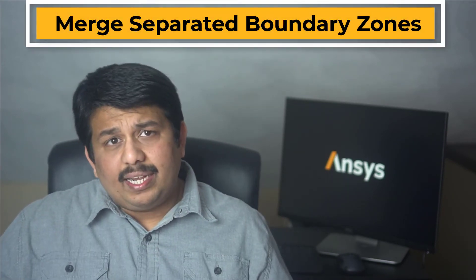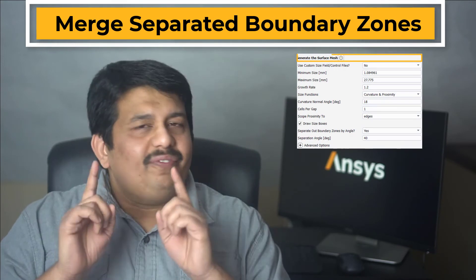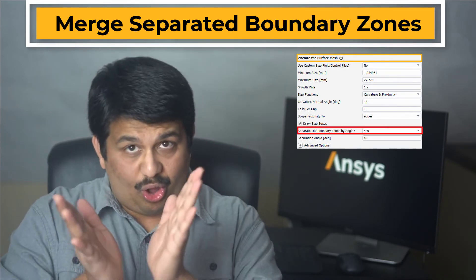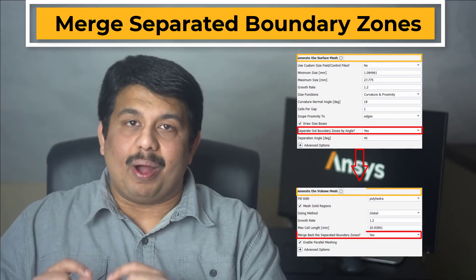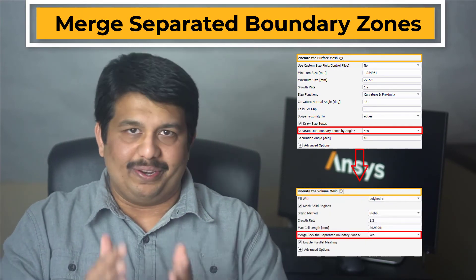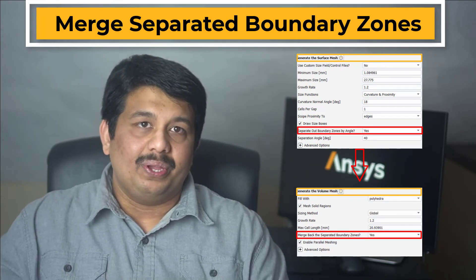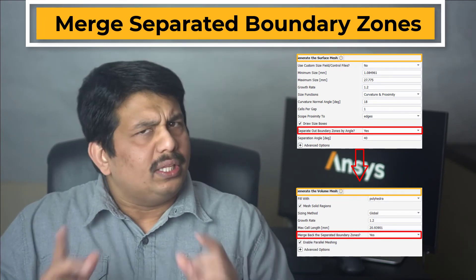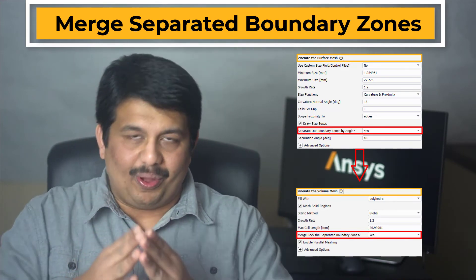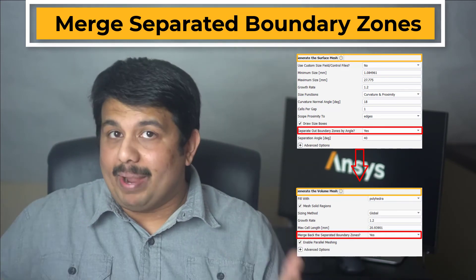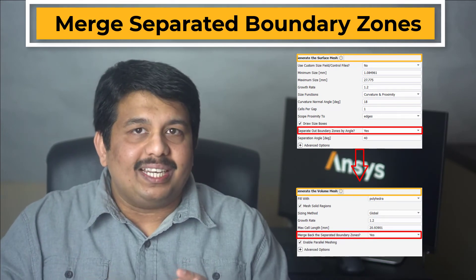The final special case involves merging of separated faces. When generating the surface mesh, if the user elected to separate zones based on angle, the Merge Back the Separated Boundary Zones option appears in the Generate the Volume Mesh task. Using this option, the user can elect to re-merge the zones prior to creating the volume mesh. By default, this option is set to No.